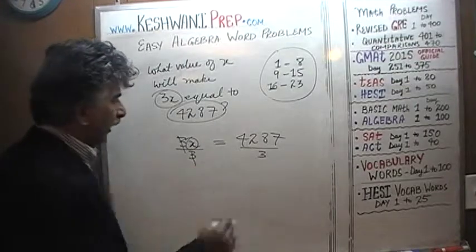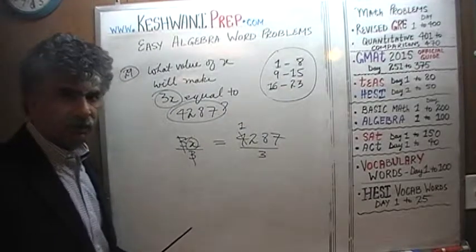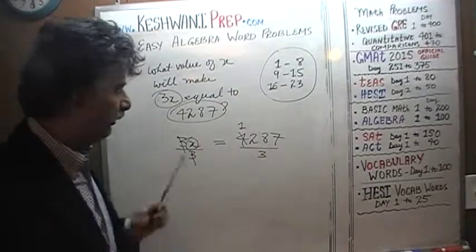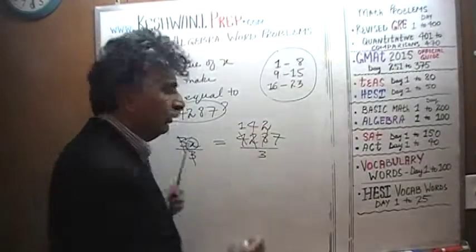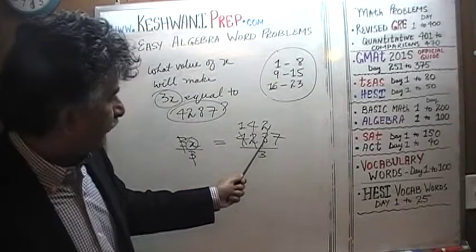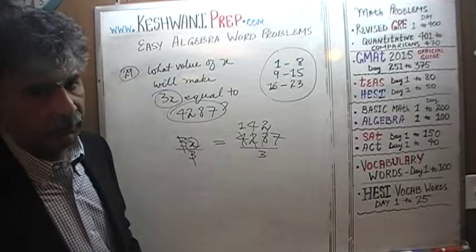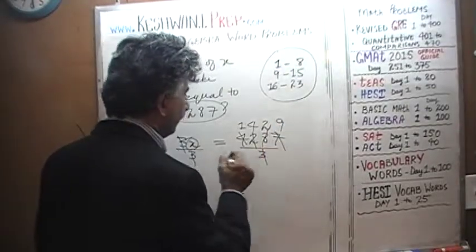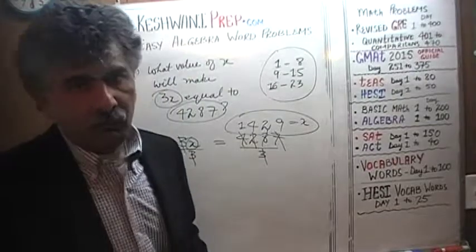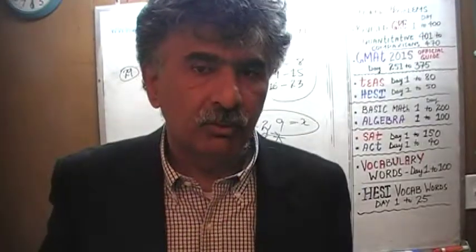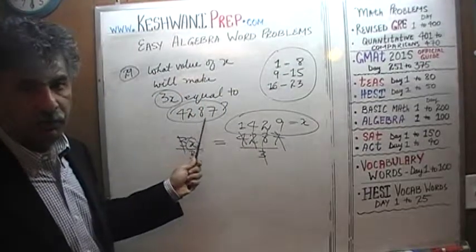Let's divide: 4 has one 3, remainder 1 joins the 2 and becomes 12, which has four 3s. Then 8 has two 3s with a remainder of 2, which joins the 7 to become 27, and 27 has nine 3s. So X equals 1429 — in order for 1429 times 3 to equal 4287.